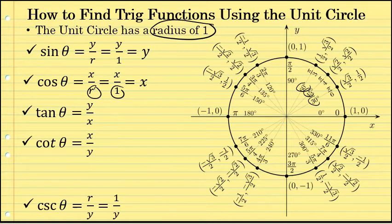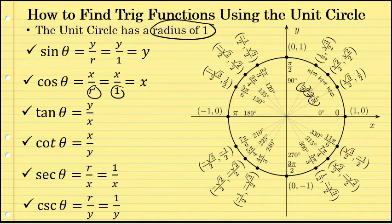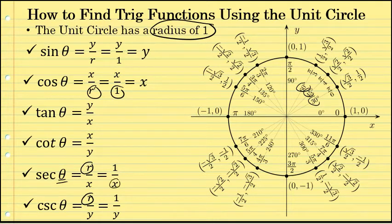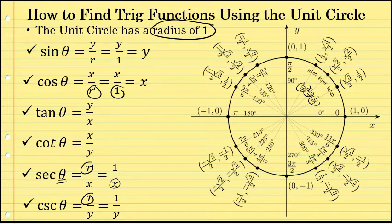The cotangent ratio is x over y. Secant and cosecant are r over x and r over y respectively, and again because r is one on the unit circle, the secant of any angle is one over its associated x-coordinate and the cosecant is one over its associated y-coordinate. Let's try an example of finding each of the six trig functions using the unit circle.